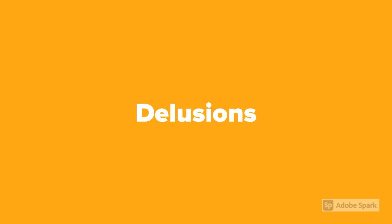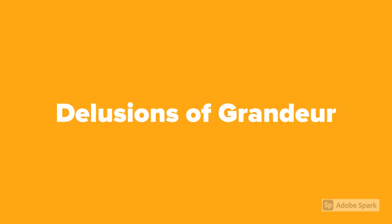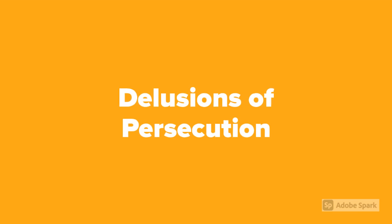Among the positive symptoms, a delusion is a falsely held belief that persists in spite of compelling contradictory evidence. Delusions of Reference: the person believes that other people are constantly talking about her or that everything that happens is somehow related to her. Delusions of Grandeur: the person believes she is extremely important, powerful, or wealthy. Delusions of Persecution: the person believes that others are plotting against or trying to harm her or someone close to her.